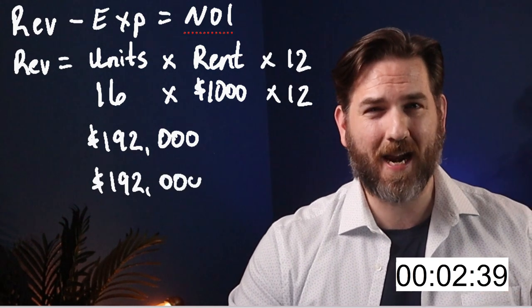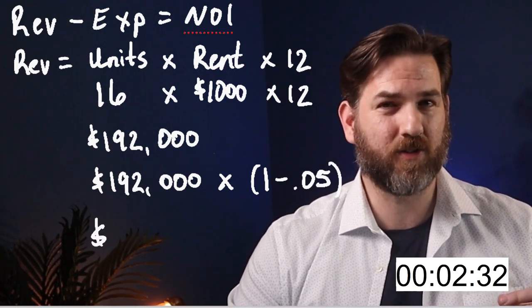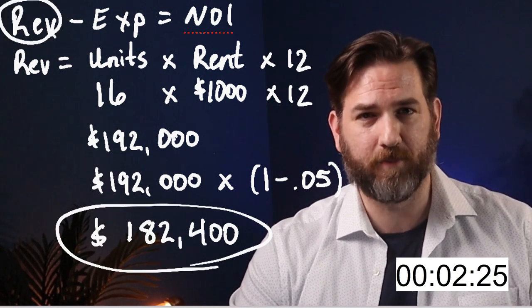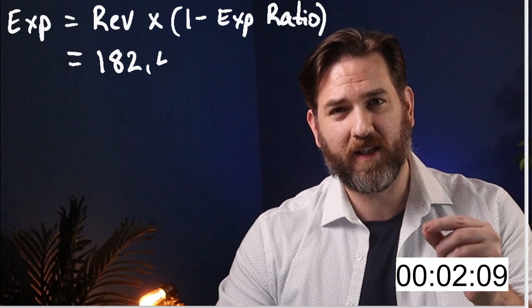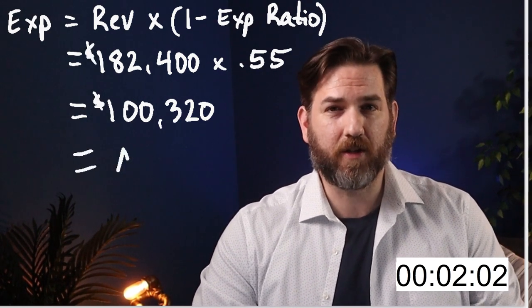We want to know the effective gross income, so we adjust total revenue for vacancy. We take the gross revenue of $192,000 and multiply by the occupancy rate, which is 1 minus 0.05, giving us $192,000 times 0.95, which equals $182,400 per year in effective gross income. Moving on to expenses, we apply the 45% expense ratio: effective gross income times (1 minus 0.45), which is 0.55. That gives us a little over $100,000 a year in net operating income.